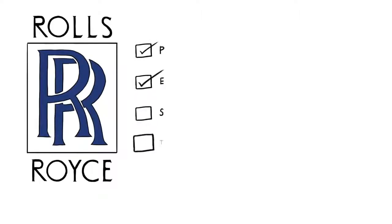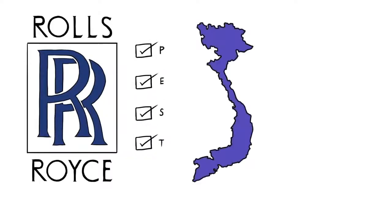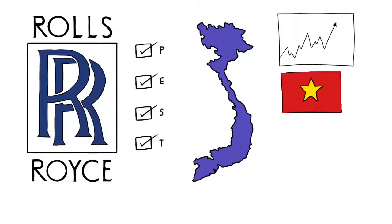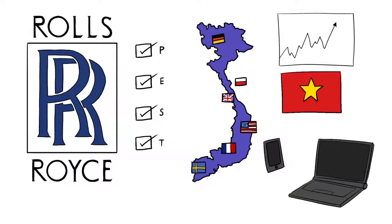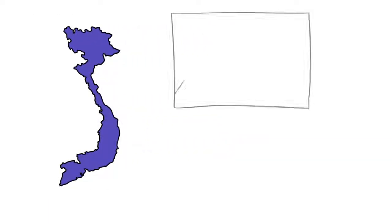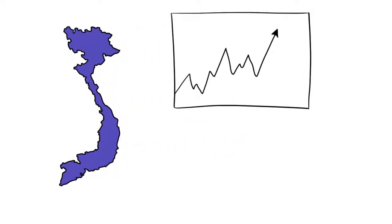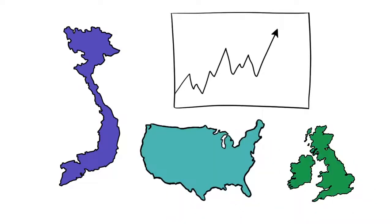For example, Rolls-Royce conducted an extensive PEST analysis before it set up operations in Vietnam. Managers believed that Vietnam presented a strong market opportunity because of its tremendous economic growth, increased political freedom, more outward openness to cultural differences, and technological advancements. Vietnam's economy was growing at higher rates than other countries without the same market saturation, such as the U.S., U.K., and other European markets.